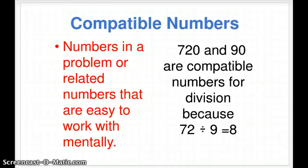Today we're going to be looking at compatible numbers when we are doing division. Compatible numbers are numbers in a problem or related numbers that are easy to work with mentally. For example, 720 and 90 are compatible numbers for division because 72 divided by 9 is 8. So that's one of those patterns of tens.